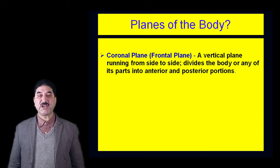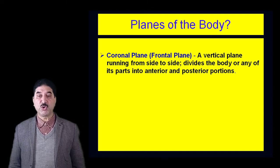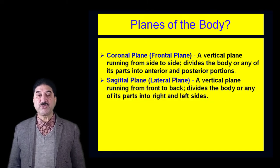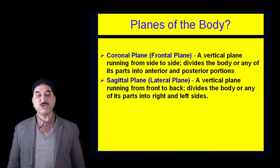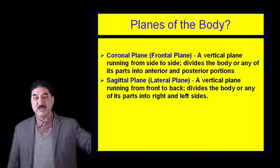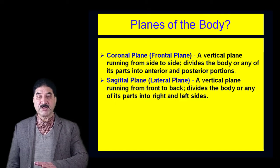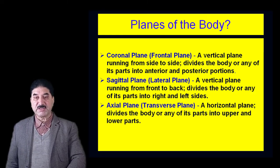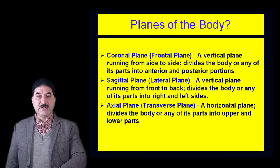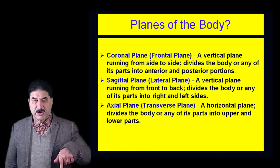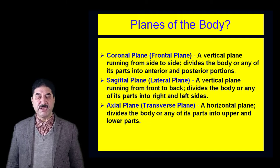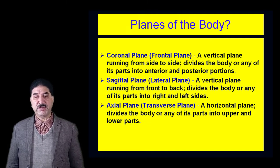The various planes of the body are: the coronal plane, also called frontal plane — a vertical plane running from side to side that divides the body into anterior and posterior portions. The sagittal plane, also called lateral plane — a vertical plane running from front to back that divides the body into right and left sides. The axial plane, also called transverse plane — a horizontal plane that divides the body into upper and lower parts. The upper part is called superior and the lower part is called inferior, also called cranial and caudal respectively.